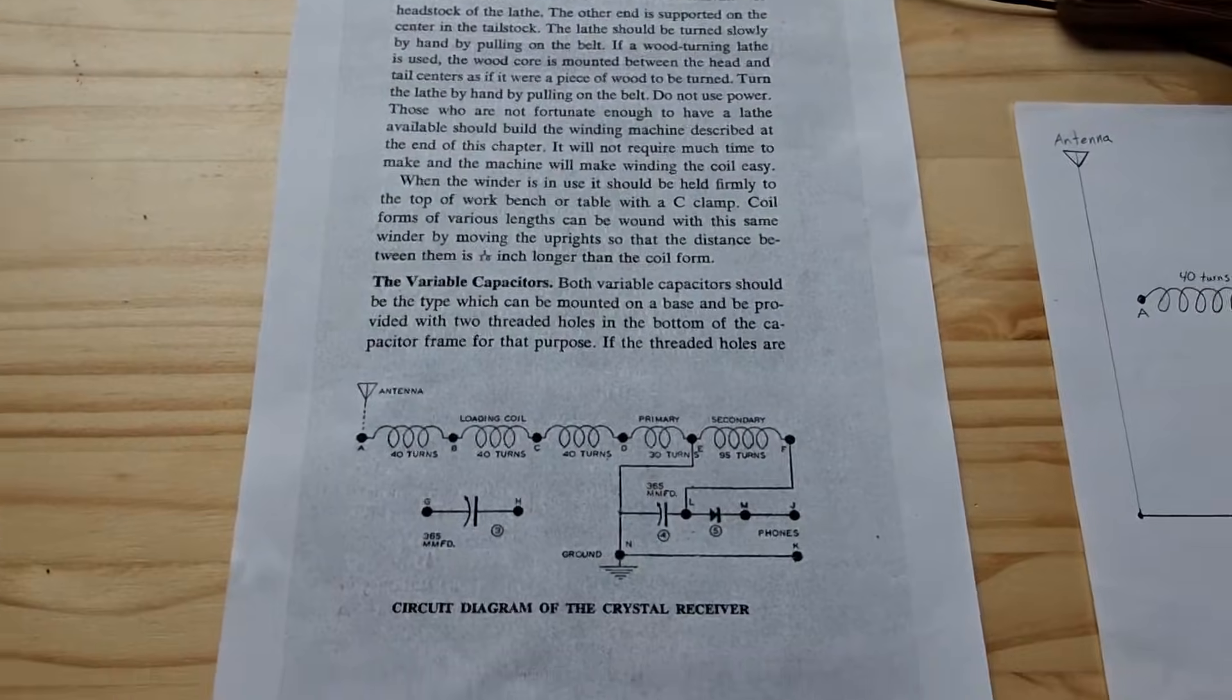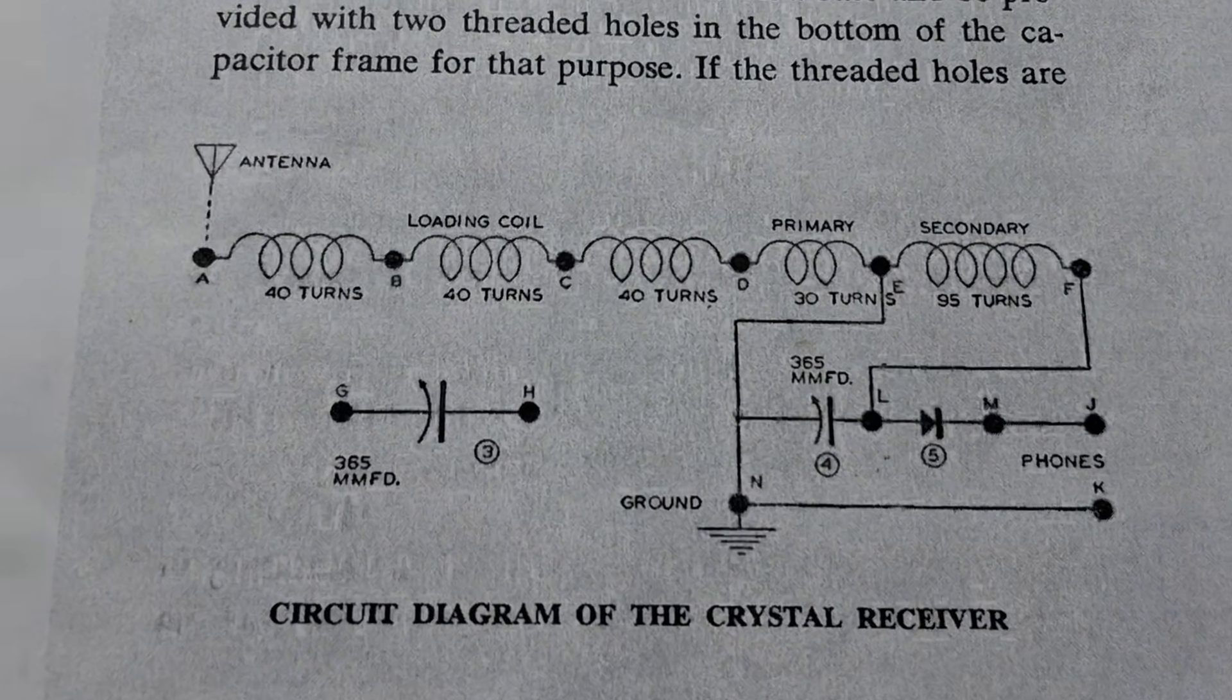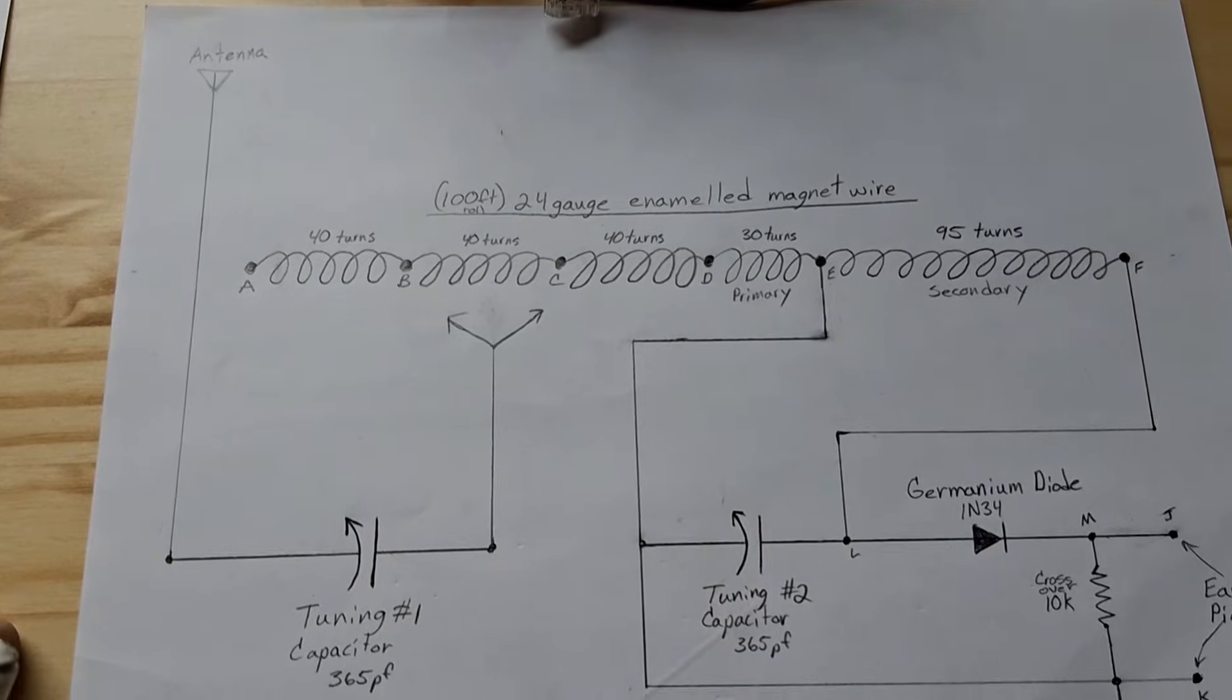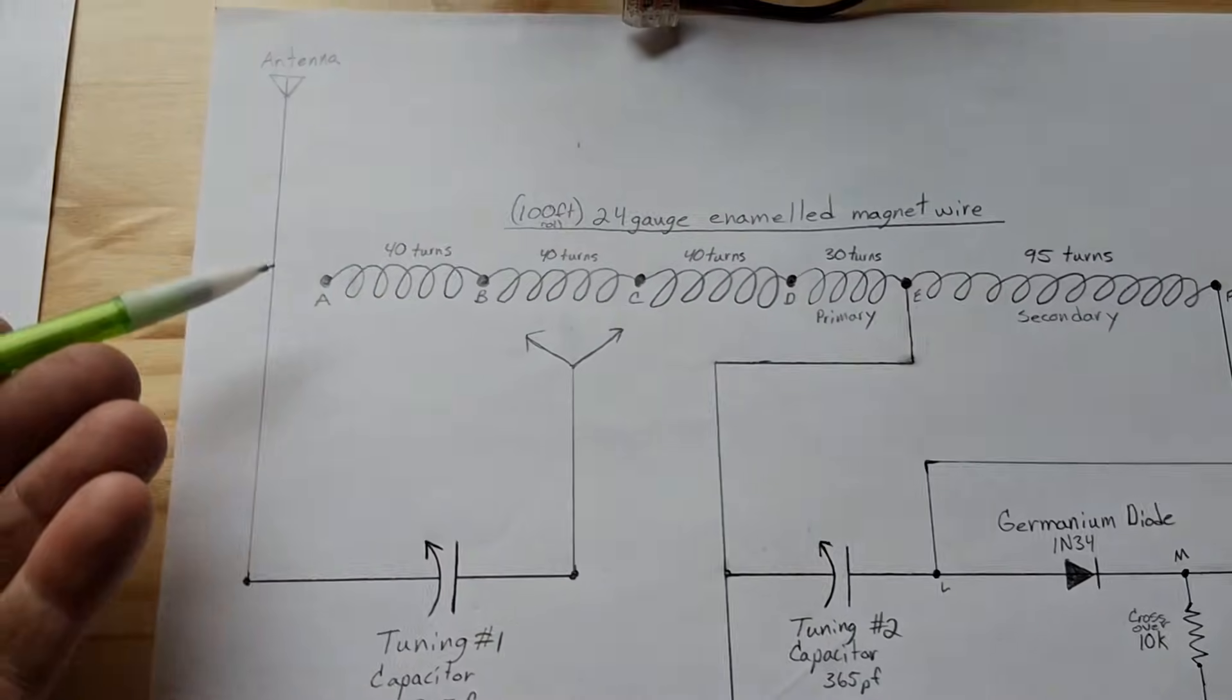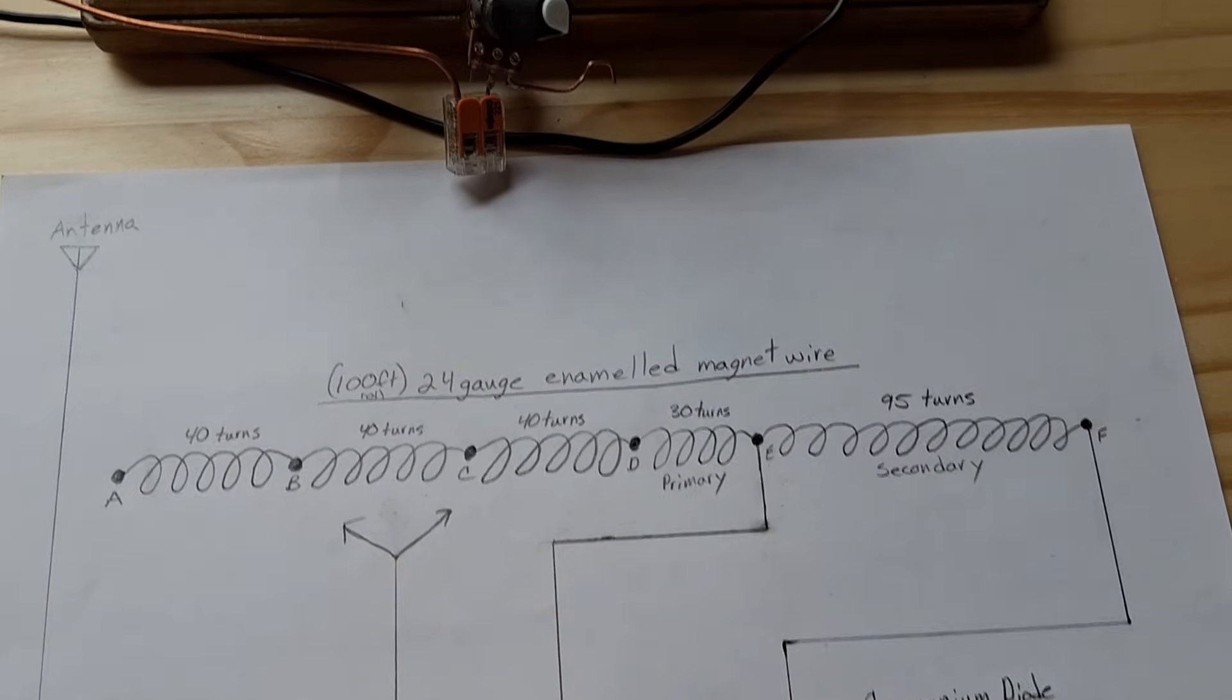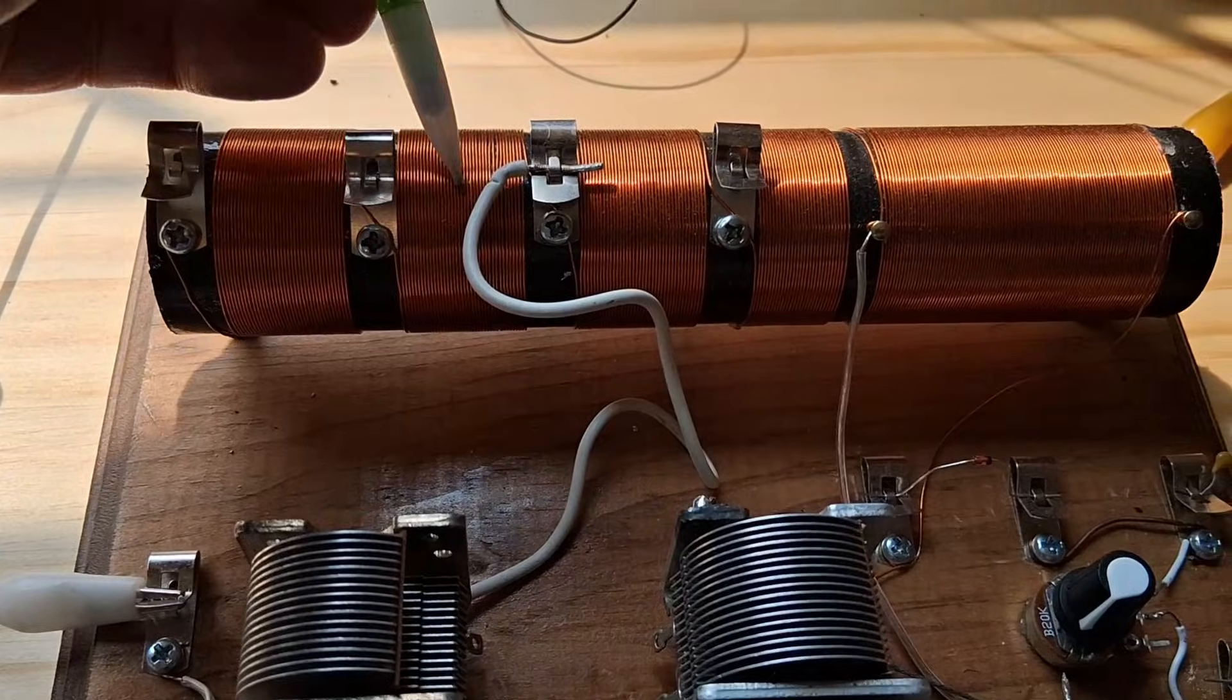Going straight to the schematics that you'll find in the book, and this is what they have. Then I made a couple alterations, and this is what I have. I kept the same coil design, the same number of turns that are over here, and so we have 40, 40, 40, 30, and 95, and that corresponds up here to the actual radio.